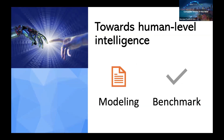Over the last five years, we have witnessed many AI breakthroughs towards building AI systems with human-level intelligence. These efforts can be roughly grouped into two categories: new AI modeling techniques and new AI benchmarks. Taking computer vision, or CV, as an example, on the modeling side, we see a trend of consolidating many task-specific CV models into a few unified foundation models.